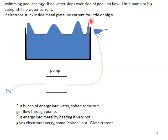So what we're going to do here is we're going to put a bunch of energy into the water so it starts sloshing around, and some of it gets to flow through the pump. How do we do this in the photoelectric effect? We pump energy into the metal by heating it, into very hot. And then we give some electrons energy and some slosh out. And so this would give us a current.